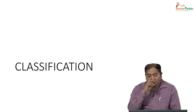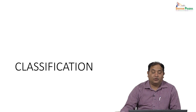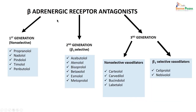Beta adrenergic blockers are classified as selective, non-selective, and dual action. First generation drugs are non-selective beta blockers — examples include propranolol, nadolol, pindolol, timolol, and penbutolol.